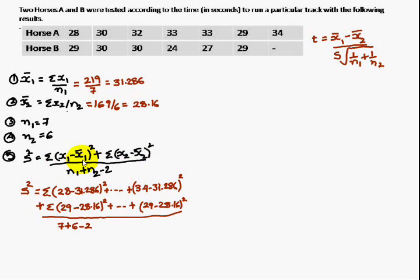Next, sigma x1 minus x1 bar whole square, means sigma x1, 28 minus 31.286 whole square, 30 minus 31.286 whole square, so on, 34 minus 31.286 whole square, plus sigma x2 minus x2 bar whole square, 29 minus 28.16 whole square by n1 is 7, n2 is 6 minus 2.